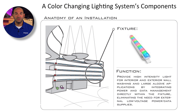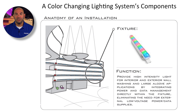First, fixtures are selected that will provide high intensity, color changing light for the flowing entry wall. For this project, the iColor Cove MX PowerCore is selected. By utilizing PowerCore technology, the data and power can be incorporated into the same wiring infrastructure.